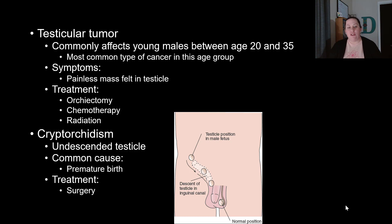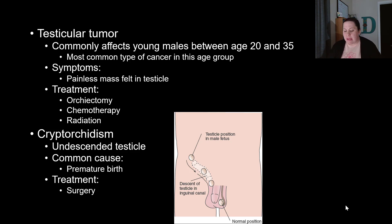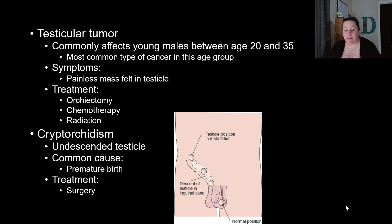Testicular tumors commonly affect young males between ages 20 and 35 — the most common cancer in this age group. Symptoms include painless masses felt within the testicle. This is often associated with cryptorchidism, where a testicle did not fully descend during development, which can increase the risk. A history of inguinal hernia as a child may also be a factor.